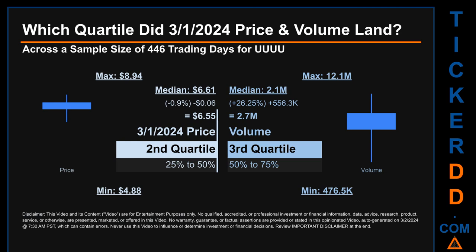The day's volume landed within the third quartile — that is within the 50% to 75% range of all sampled daily volume — which saw a max daily volume of 12.1 million and a minimum of 476.5 thousand. Quartiles tell us about the spread of a data set by breaking that data set into quarters, just like how the median breaks the set into half. Descriptively, UUUU has a median price of $6.61. Therefore, the 1st of March 2024 price was lower from that middle marker by 0.9%. The day's volume of 2.7 million was more than the median by 26.25%.